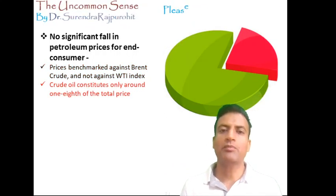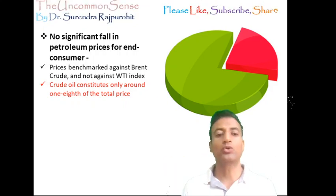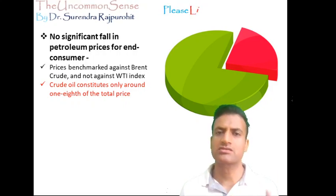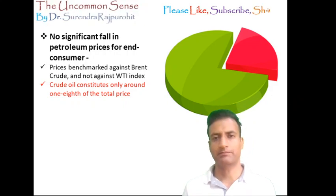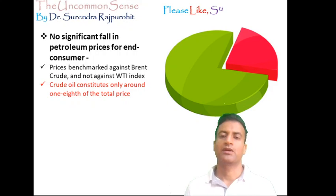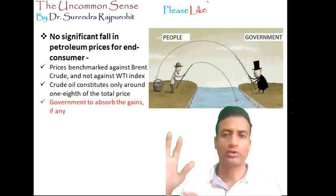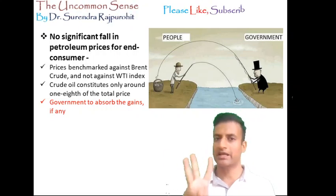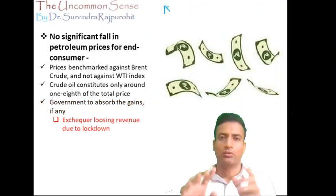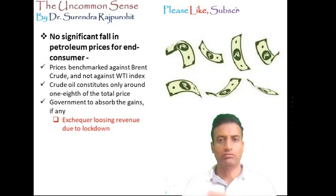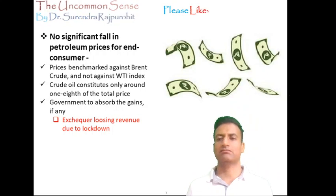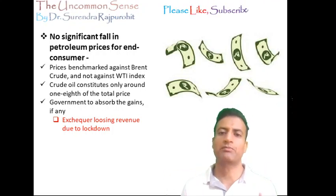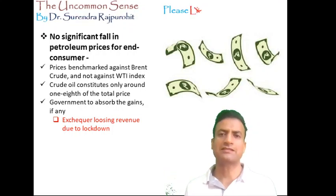Second, crude oil prices constitute only around one-eighth of the total price we pay at the petrol pump. The other and major constituents of the price of petrol are the refinery cost, transportation cost, taxation, etc., which have not changed. Thirdly, even if there were to be any gains due to the decline in crude oil prices, it is very unlikely that the government will pass on the benefits to consumers — because, again, of three reasons. One, due to overall lower consumption of petrol during lockdown, the exchequer is already struggling with revenue loss, and the government is likely to absorb any gains due to this drop in prices to offset their losses, at least partly, and rightly so.